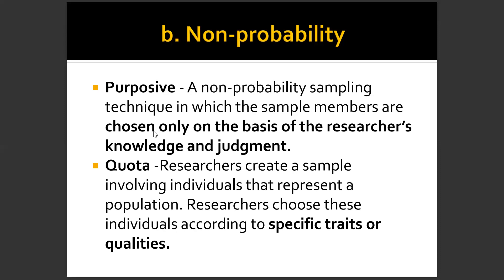Next is quota sampling. Researchers create a sample involving individuals that represent a population, choosing them according to specific traits or qualities. For example, once you are able to reach a certain number in your study, you have already reached your sample size — that is quota sampling.